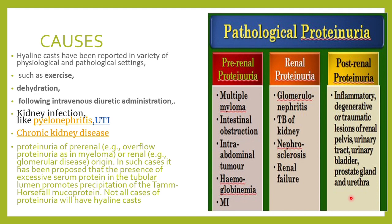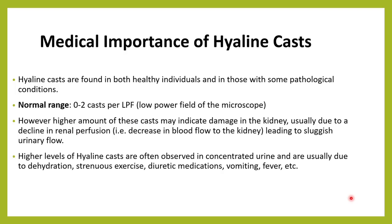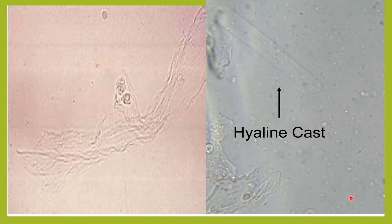The clinical importance of hyaline casts is that they are found in both physiological and pathological conditions. Normally 0 to 2 per low power field is considered normal. If you correlate with the patient's clinical findings and the patient is having proteinuria along with many hyaline casts in the urine, it might point you toward the exact cause of proteinuria or other underlying conditions.